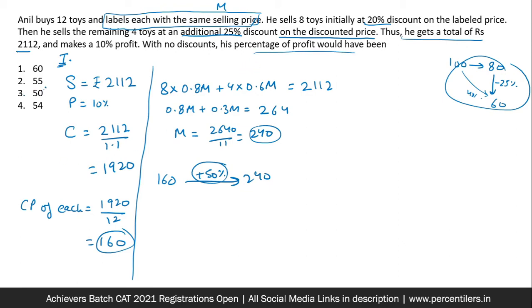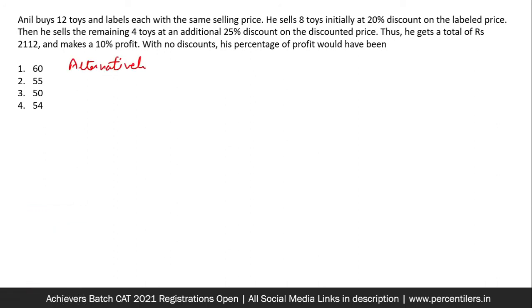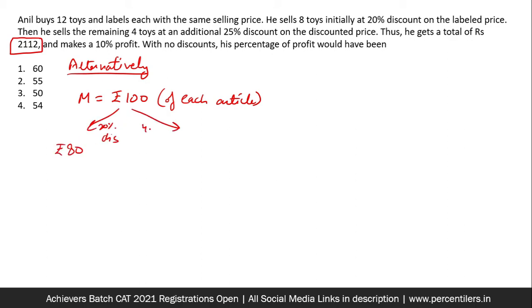Now alternatively, what I would do alternatively, I would first assume the marked price as 100 and I will hide this 2112. Marked price 100 of each article. Now at 20% discount, it would sell at 80. At 40% discount, it will sell at 60.